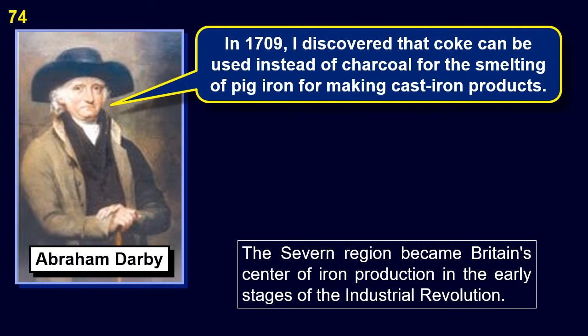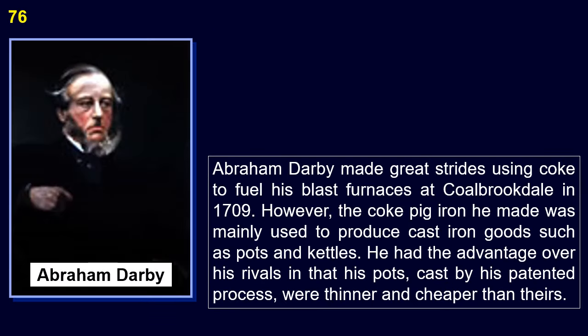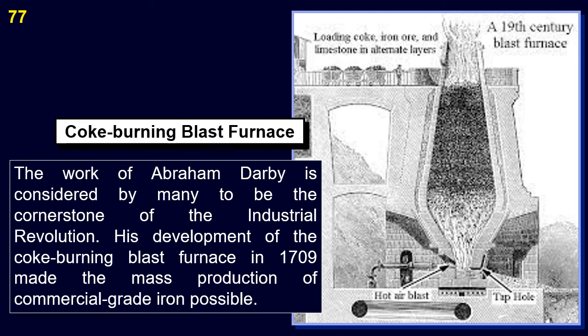The Severn region became Britain's center of iron production in the early stages of the industrial revolution. Abraham Darby, the owner of an iron foundry at Coalbrookdale along the Severn River in the west of England, solved this problem by developing a process to drive the unwanted impurities from coal, producing coke in 1709. Coke was so cheap that Darby could sell cast iron pots and kettles at prices accessible to common folk. He had the advantage over his rivals in that his pots, cast by his patented process, were thinner and cheaper than theirs. The work of Abraham Darby is considered by many to be the cornerstone of the industrial revolution.